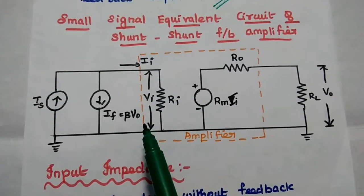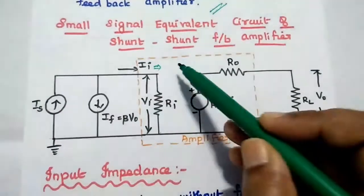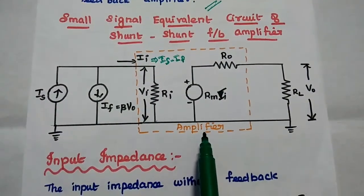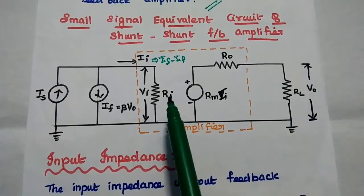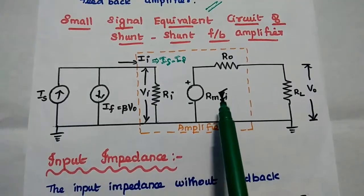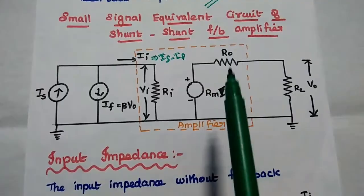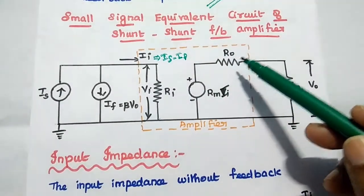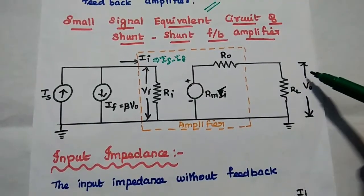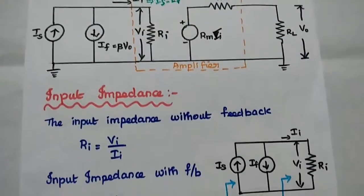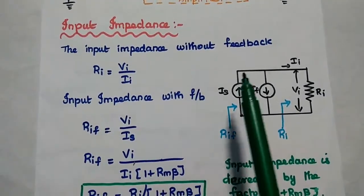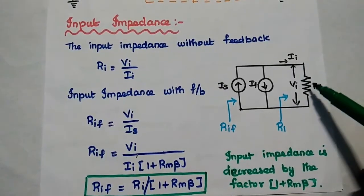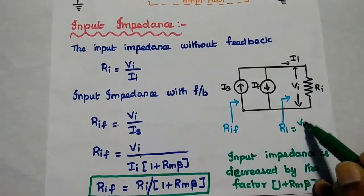The source input is the current signal IS in parallel with the feedback signal IF. The direction of the feedback signal is opposite to the source signal because of negative feedback. IF equals beta into VO, and the amplifier input current II equals the source current minus the feedback current. This is the equivalent circuit of the amplifier, consisting of input resistance RI and a voltage source Rm·II. Since the output is a voltage signal, we use a voltage source in series with the output resistance, with load resistance RL across which we obtain the output voltage. The input impedance without feedback, RI, equals VI divided by II.